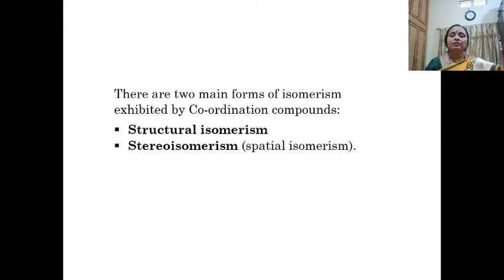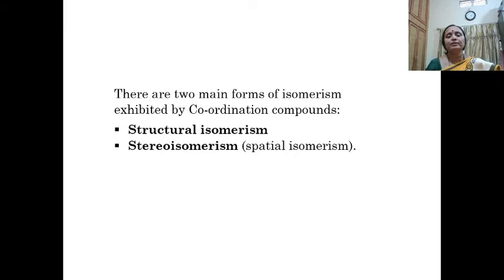Coordination compounds have two main forms of isomerism: structural isomerism and stereoisomerism. Stereoisomerism is also called spatial isomerism. In the last class we studied structural isomerism, and today we are going to go ahead with stereoisomerism.